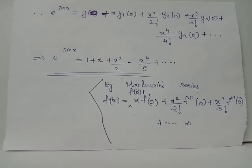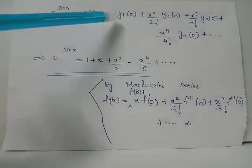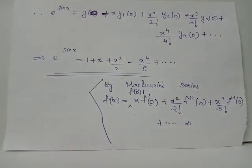Using the Maclaurin series — f(x) equals f(0) plus x·f'(0) plus (x²/2!)·f''(0) plus etc. — we have e raised to sin x equals y(0) plus x·y1(0) plus (x²/2!)·y2(0) plus etc. Substituting the computed values y(0)=1, y1(0)=1, y2(0)=1, y3(0)=0, y4(0)=-3, we get e raised to sin x equals 1 plus x plus x²/2 minus x⁴/8 plus etc., which is the desired result to be proved.